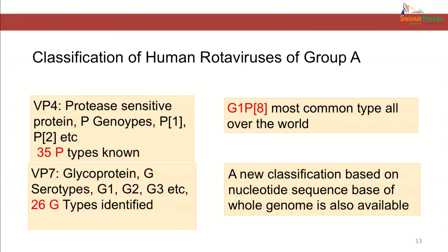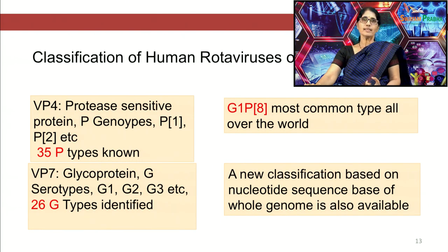VP4 is a protease-sensitive protein present on the capsid and for its characterization a genotypic system is employed — 35 P types have been identified, designated P1, P2, P3 and so on. VP7 is a glycoprotein characterized by antigenic characterization — 26 G types have been identified, designated G1, G2, G3 and so on. Any particular strain of rotavirus is designated by a G antigenic type and P genotype. G1P8 is the most common type found worldwide. A new classification system based on nucleotide sequence of the whole genome has also been developed for group A rotavirus.